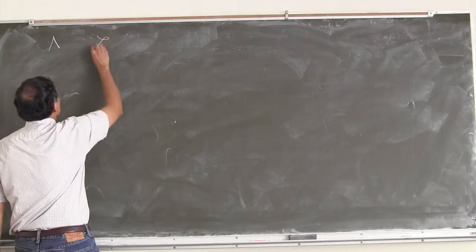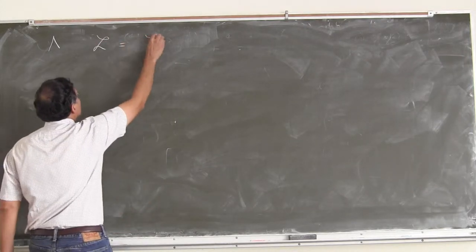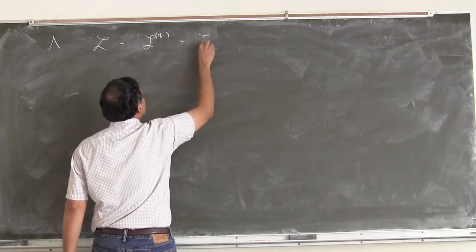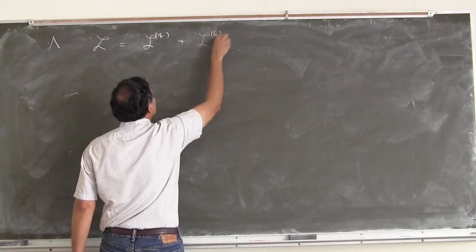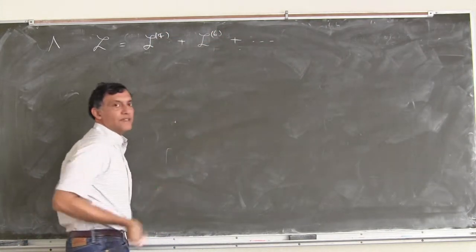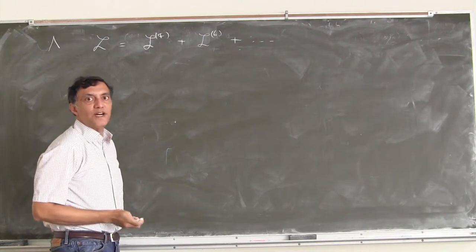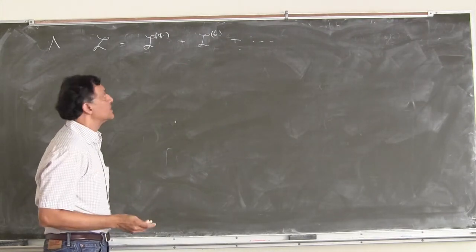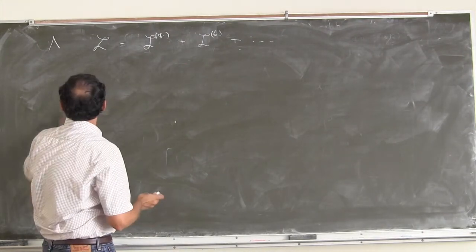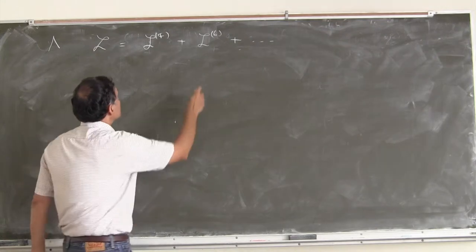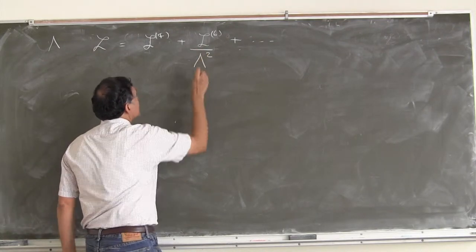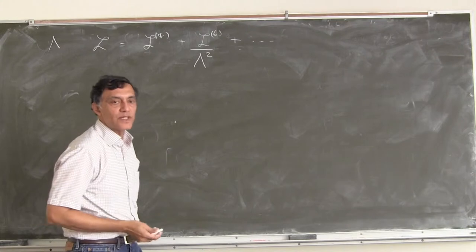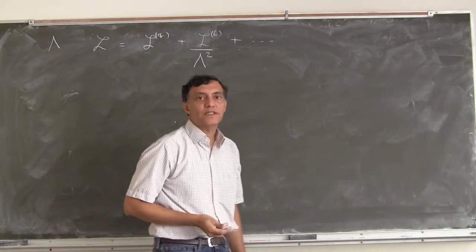Write down the Lagrangian: you have some terms of dimension 4, some terms of dimension 6, and so on. Sometimes you might have terms of dimension 5, but typically you go from 4 to 6. By dimensional analysis there's a scale lambda squared, and dimension 7 would have lambda cubed, etc.